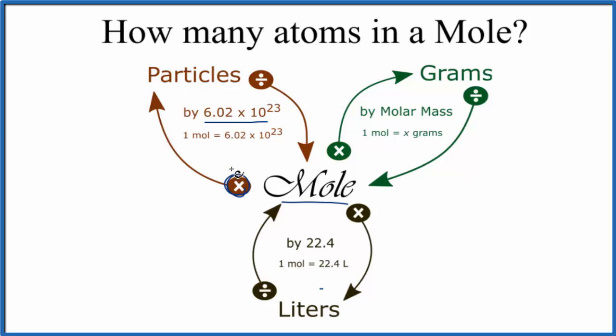But if you're given particles, say 3.01 times 10 to the 23rd sodium atoms, and you want to know how many moles you have, in that case you divide by Avogadro's number. So going from moles to particles we multiply, from particles to moles we divide.